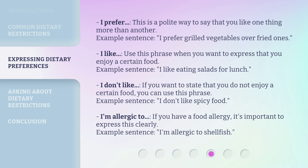'I like' — use this phrase when you want to express that you enjoy a certain food. Example sentence: I like eating salads for lunch. 'I don't like' — if you want to state that you do not enjoy a certain food, you can use this phrase. Example sentence: I don't like spicy food.